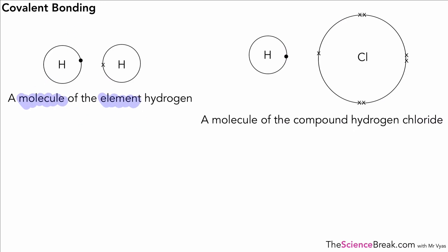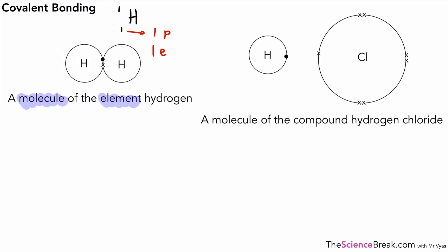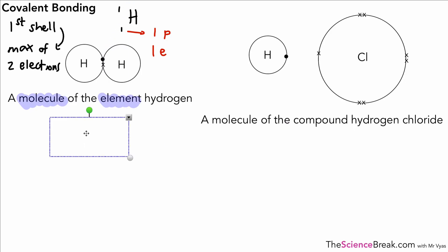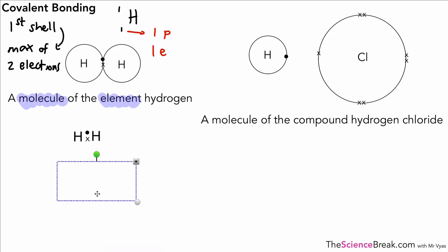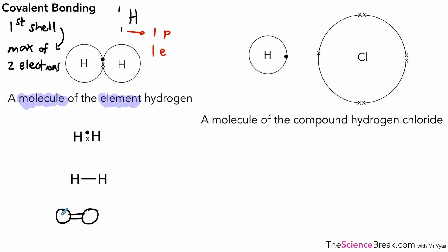The next one is a molecule of the element hydrogen. You'll remember hydrogen from the periodic table has one proton and one electron in the outermost shell. Hydrogen exists as H₂ and it bonds with a covalent bond. Remember the first shell only carries a maximum of two electrons, so those two hydrogen atoms now have a full outer shell. We can draw it in our other various ways: the second method without shells, a single bond between the two hydrogen atoms, and the ball-and-stick representation.